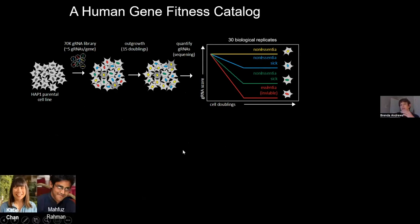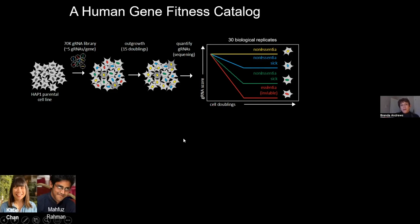To decide which genes fit these criteria, we had to make a human gene fitness catalogue in the cell line used for experiments. This work is overseen by Katie Chan in Jason Moffitt's lab, with computational scoring analysis by Mahfouz Rahman, a PhD student in Chad's lab. In this experiment, we take the wild-type HAP1 parental cell line and infect it with a guide RNA library targeting every human gene with at least five guide RNAs per gene. We then grow out these cells over many doublings, taking samples and quantifying guide RNA abundances at each step using a sequencing-based barcode readout.